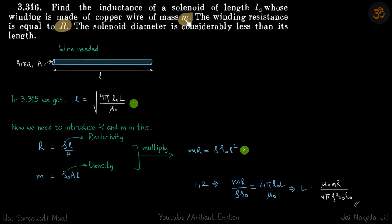Now we need to introduce the mass and resistance into the equation. Resistance is ρL/A and mass is ρ0AL, where ρ is resistivity and ρ0 is density.